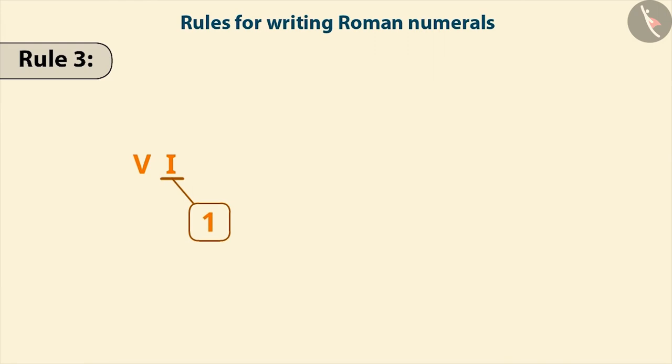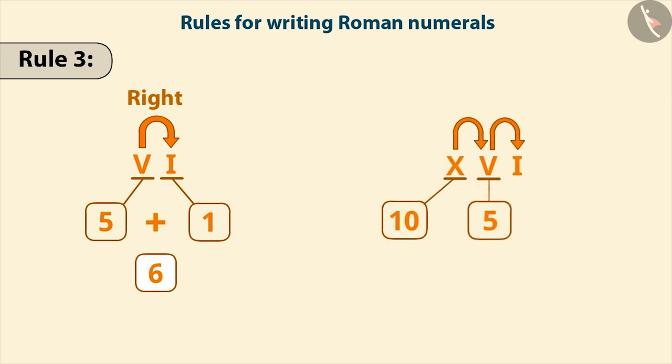If the symbol of smaller value is written to the right side of the symbol of larger value, then their values are added. Just like adding 1 to 5 gives the number 6 and adding 10, 5 and 1 gives the number 16.